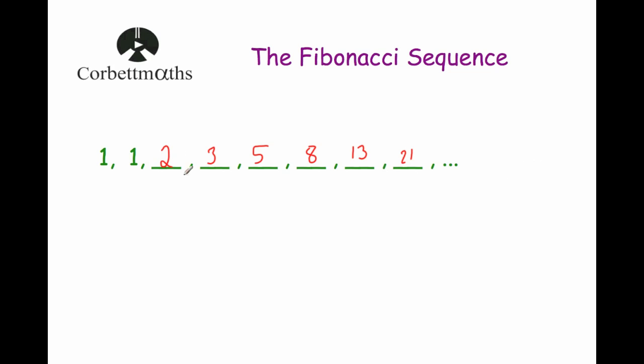So these are Fibonacci numbers: one, one, two, three, five, eight, thirteen, twenty-one. And this is the Fibonacci sequence. And it's fine by just starting off with the numbers one and one, adding them together to get the next number, then taking the one and two, adding them together to get three, two and three, adding them together to get five, and so on.